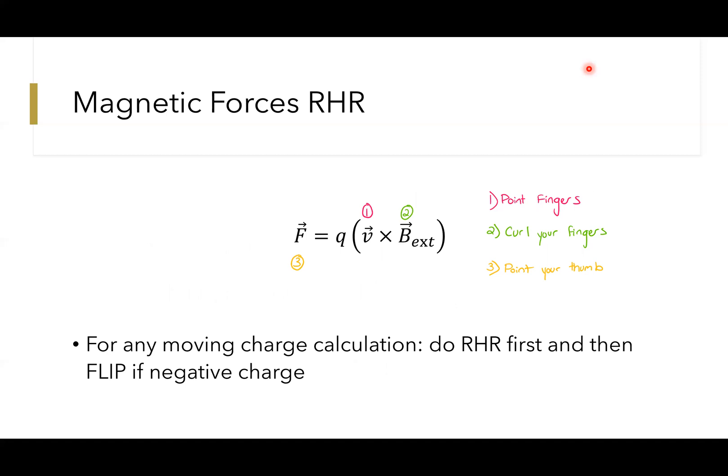You saw those cross products, guys. This is where we have our second right-hand rule. The best way to think about this is in three steps. First, you're going to look at your first variable of the cross product—that's your v here. You're going to point your right hand in the direction of v, the direction of the velocity. You're then going to curl or point your fingers, bend your fingers really, in the direction of the second variable, which is B, the magnetic field.